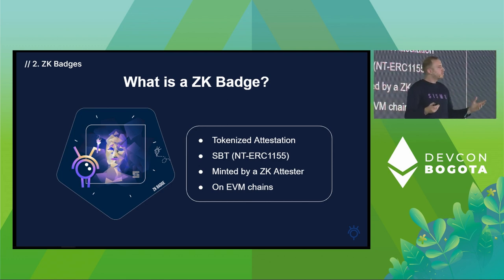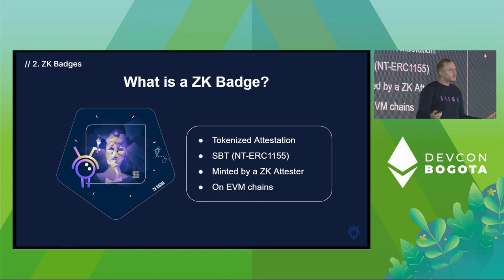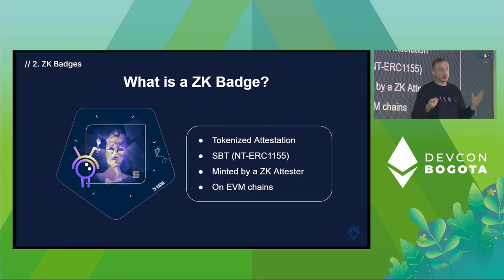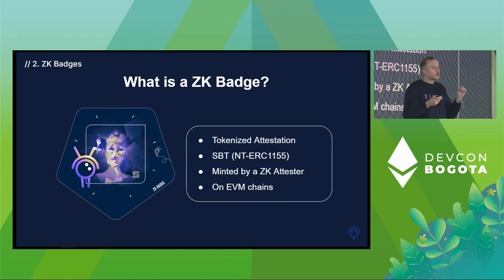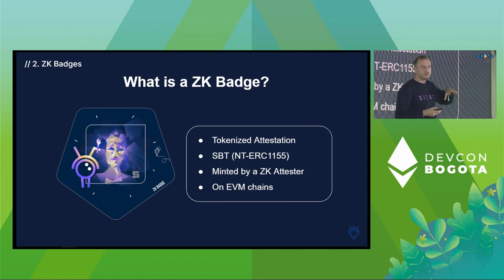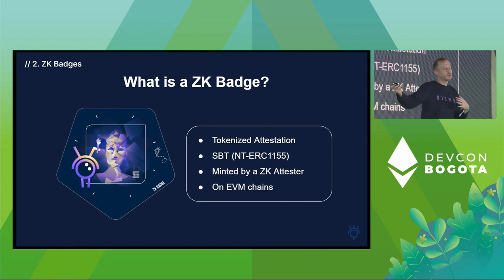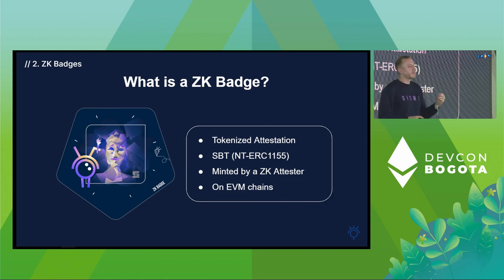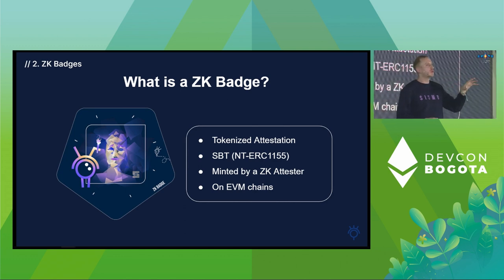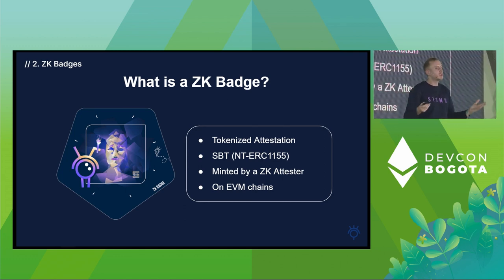ZKBadges are ZK because they're minted by a ZK attester — a smart contract that accepts zero-knowledge proofs. You bring the zero-knowledge proof that you have a CryptoPunk, and it gives you the badge that you have a CryptoPunk. It's deployed currently on Polygon, but we plan to go everywhere, especially on Layer 2s.